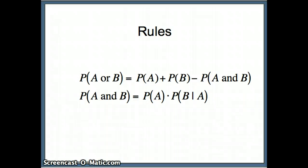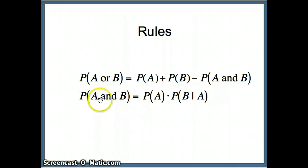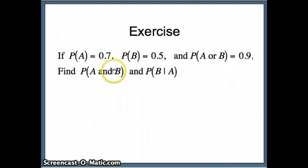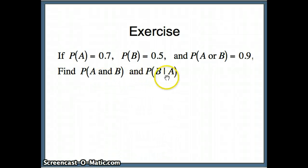Now we have two rules. The OR rule tells us: P(A or B) = P(A) + P(B) − P(A and B). The AND rule tells us: P(A and B) = P(A) × P(B|A). We want to use these rules given: P(A) = 0.7, P(B) = 0.5, and P(A or B) = 0.9, to find P(A and B) as well as P(B|A).